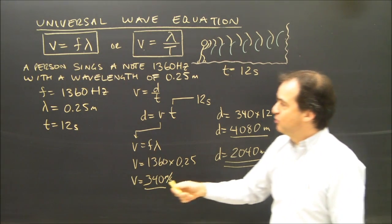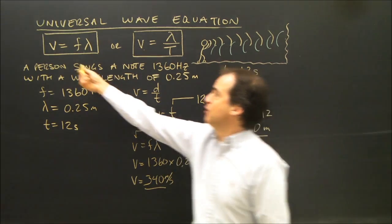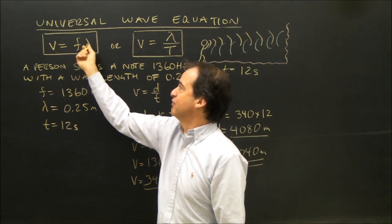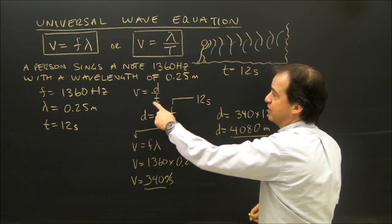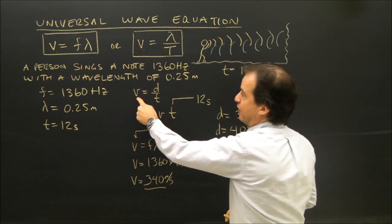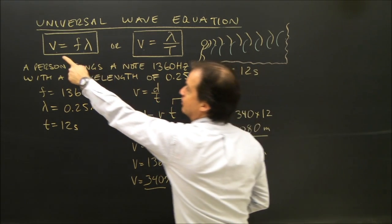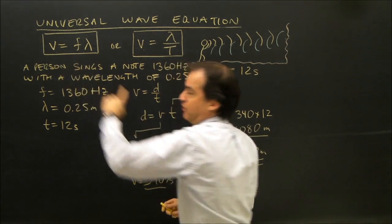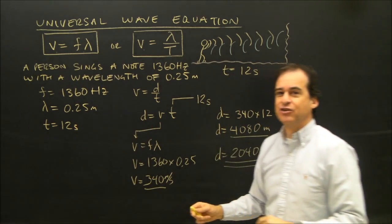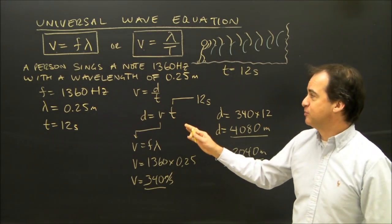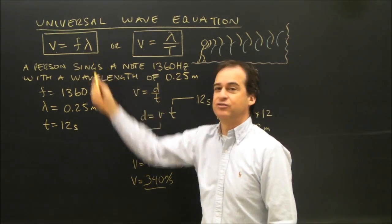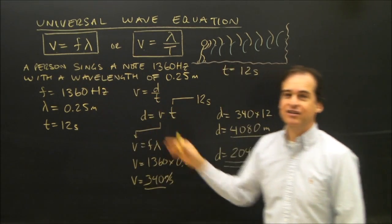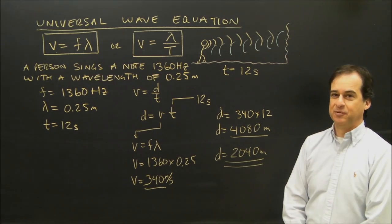You can see we used the formula V equals F lambda and the formula V equals D over T — both relate to how fast the wave is traveling. There are a number of problems you can solve by using these two formulas together; this is just one sample.